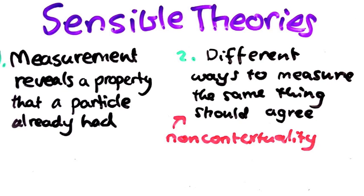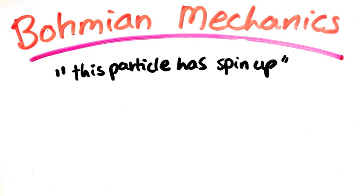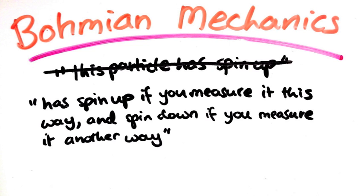This is where the problem is though. In Bohmian mechanics, this doesn't always happen. So instead of always being able to say statements like this particle has spin up in the y direction, if you measure it this way, but spin down if you measure it another way.